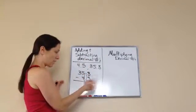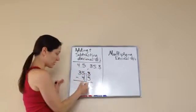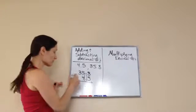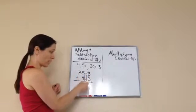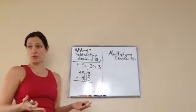So if I was subtracting, I would work it like normal, like we normally do, and then bring down my decimal. If I was adding, we would work it like normal and bring down my decimal, and that's our answer.